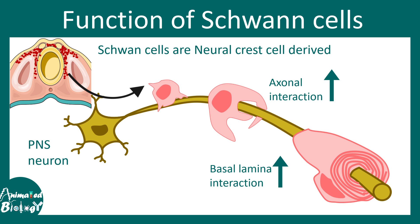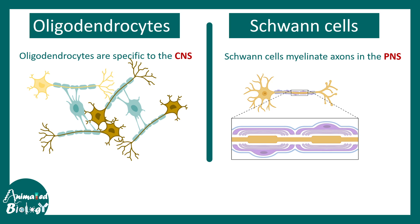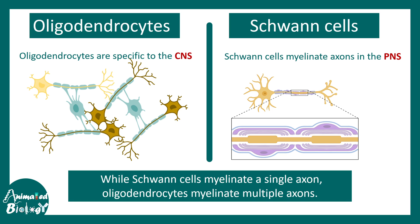Each of these stages of the Schwann cell can be discriminated via specific molecular markers. Comparing Schwann cells with oligodendrocytes: oligodendrocytes are also glial subtypes that help in myelination in the central nervous system. Schwann cells are present in the peripheral nervous system only. One Schwann cell can contact only a single axon, whereas one oligodendrocyte can contact and myelinate several axons. Their origin is also different — Schwann cells are neural crest derivatives whereas oligodendrocytes are generated from common neuronal progenitors.